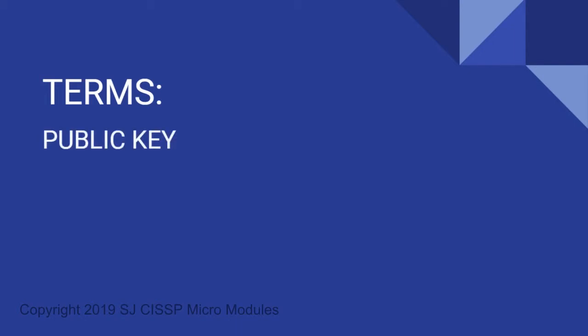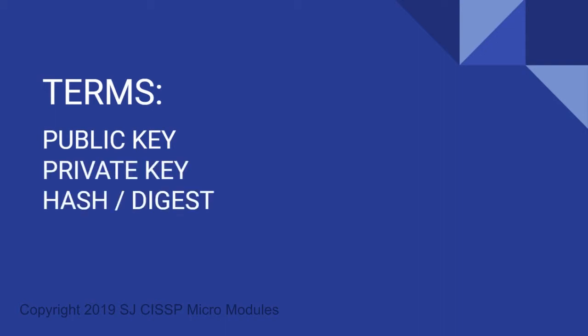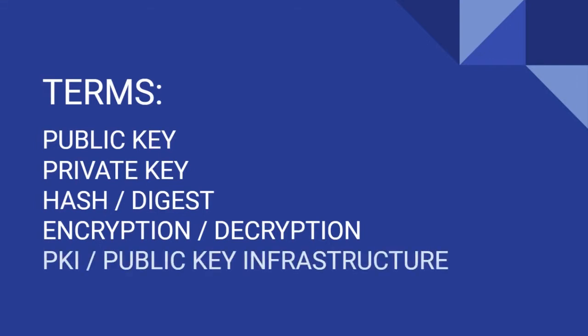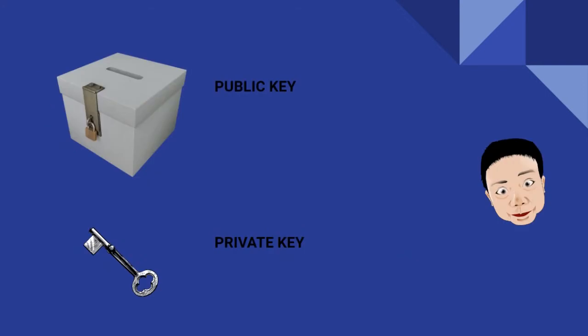You should be familiar with the term public key, private key, what a hash and a digest is, what encryption and decryption is, and PKI, or public key infrastructure. As a quick review, remember that for digital signatures to work, each user has to have a public key and a private key. This is part of the public key infrastructure needed for digital signatures to work.